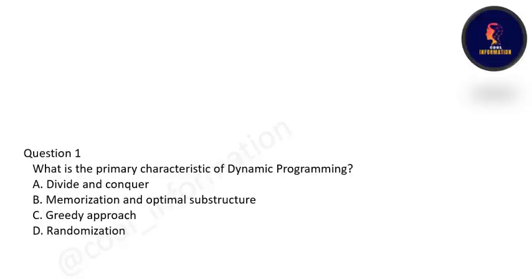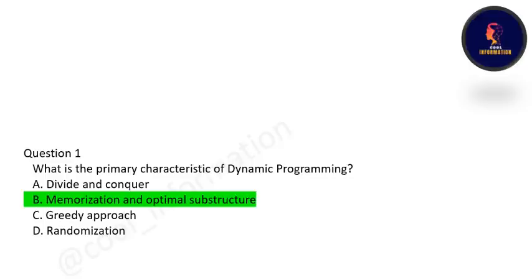The first question is: what is the primary characteristic of dynamic programming? Options are divide and conquer, memoization and optimal substructure, greedy approach, or randomization. The correct option is B — memoization and optimal substructure is the primary characteristic of DP.